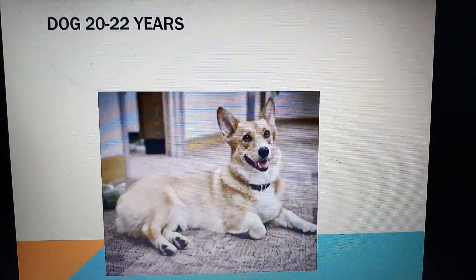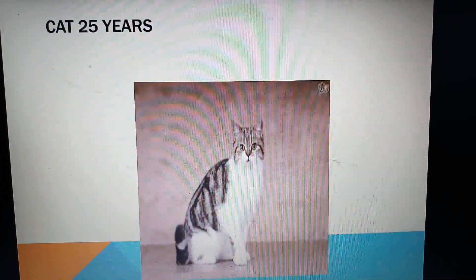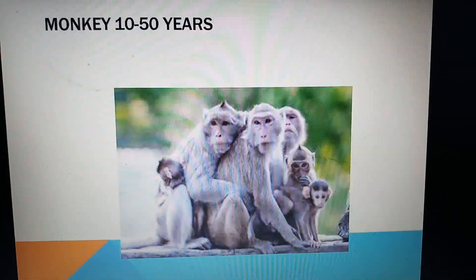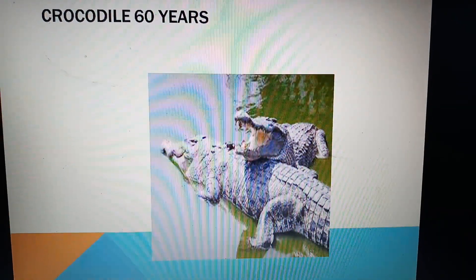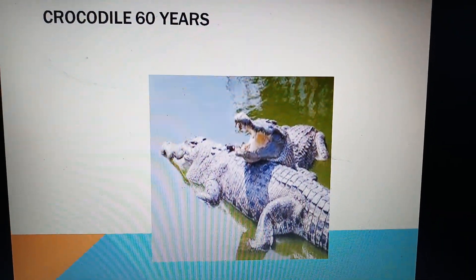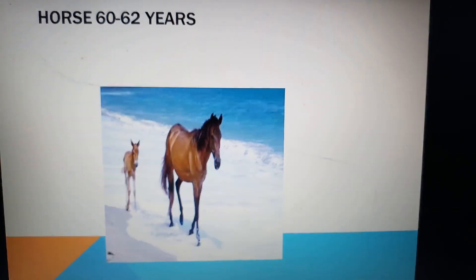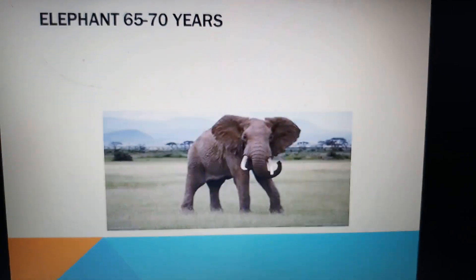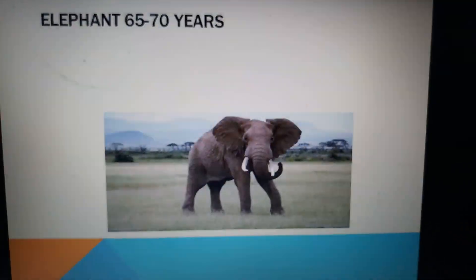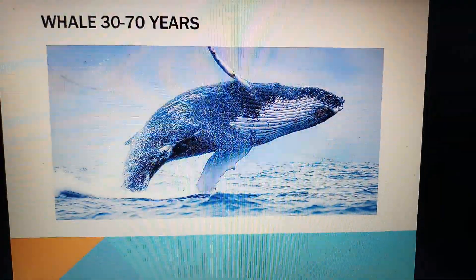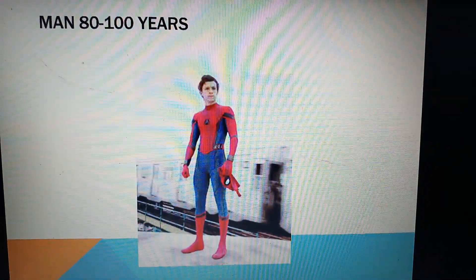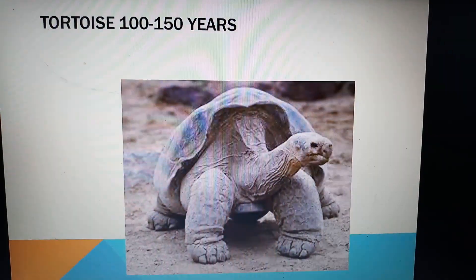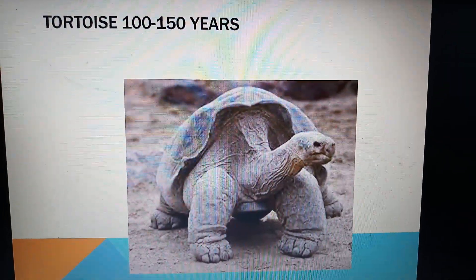Dogs have a lifespan of around 20 to 22 years, cats 25 years, monkeys between 10 to 50 years, crocodiles around 60 years, horse 60 to 62 years, elephant around 65 to 70 years, whale 30 to 70 years, man 80 to 100 years, and finally tortoise 100 to 150 years.